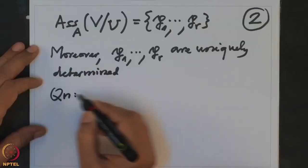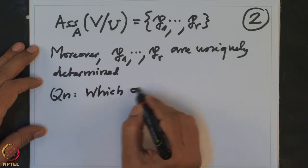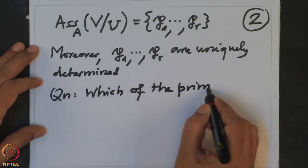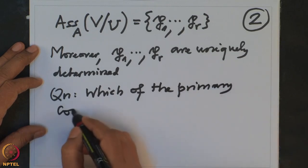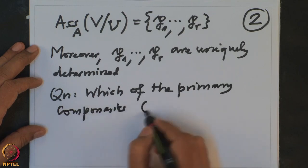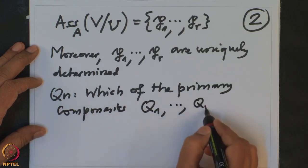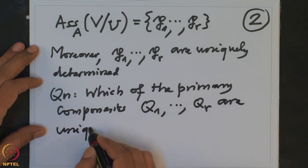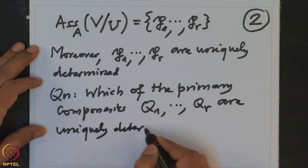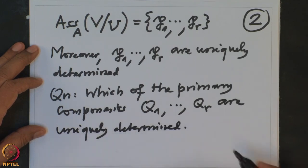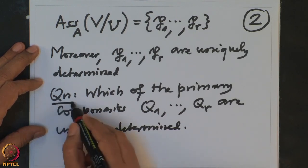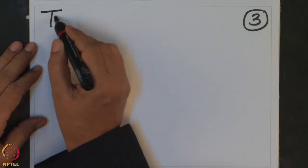The question is: which of the primary components Q_1 to Q_r are uniquely determined? As we will see, the answer is that not all of them are uniquely determined, but some of them are. We are going to find out which ones. For this we want to first prove a preparation — a theorem which will help us answer this question.